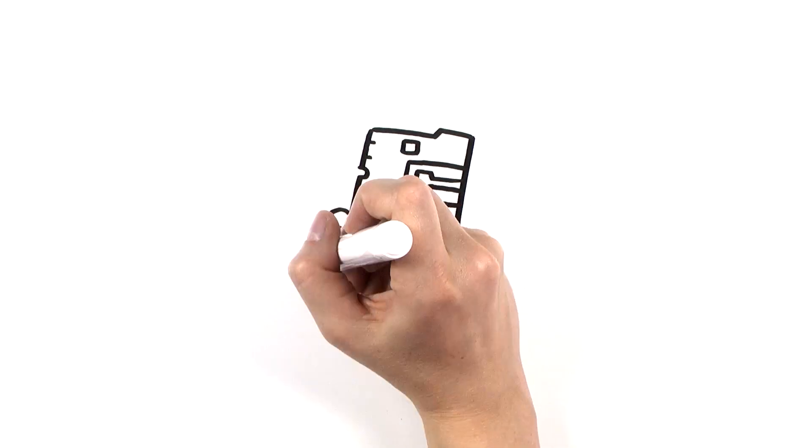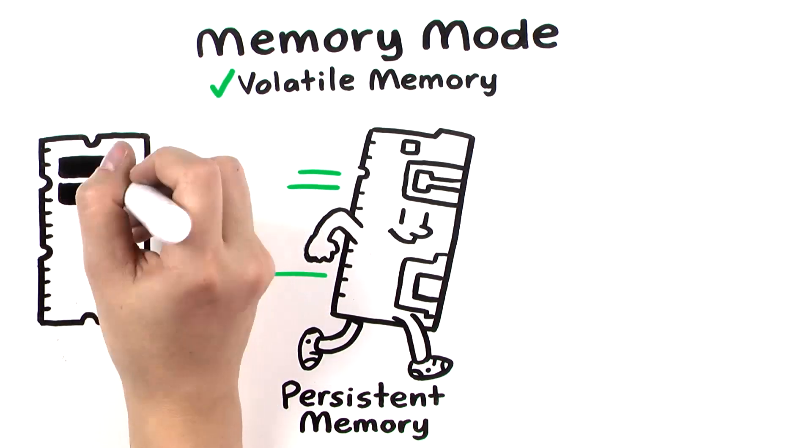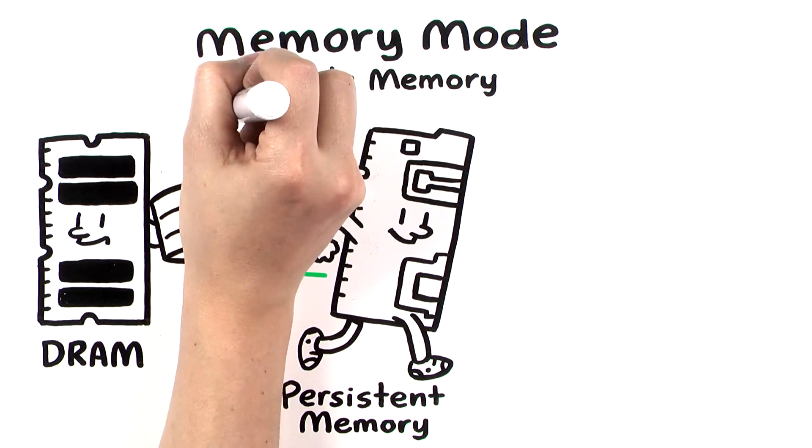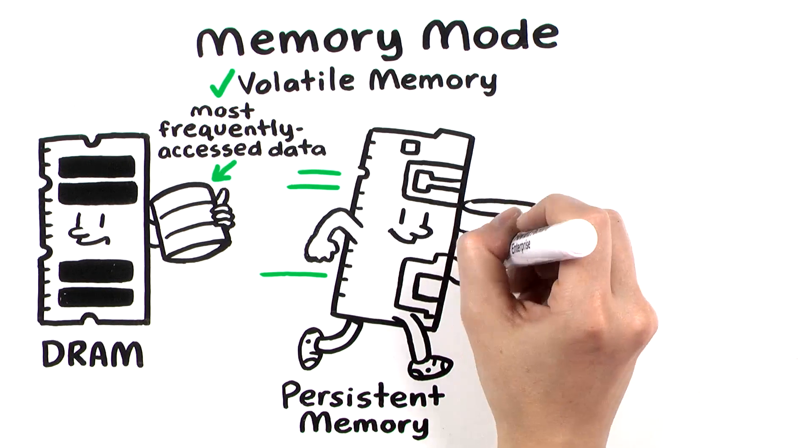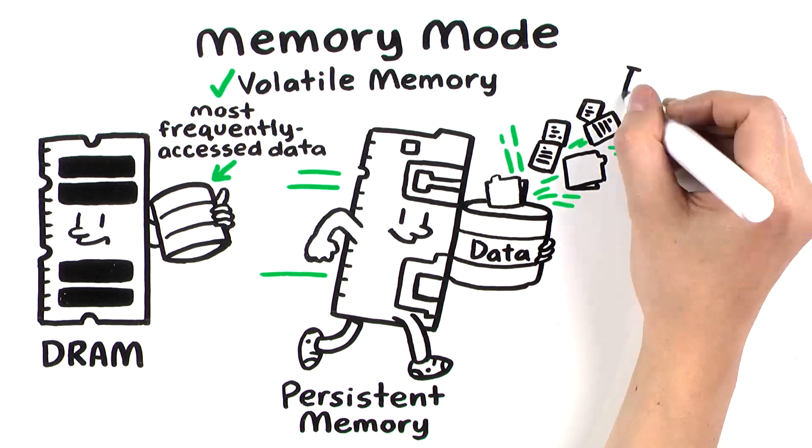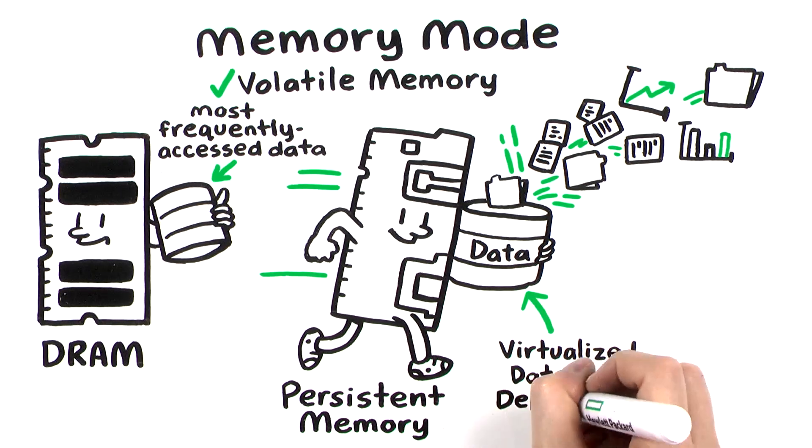When HPE persistent memory is configured for memory mode, your server will use it as memory, just as it does with DRAM. The DRAM will manage the most frequently accessed data, while the HPE persistent memory provides large memory capacity to support virtualized database deployments and big data analytics applications.